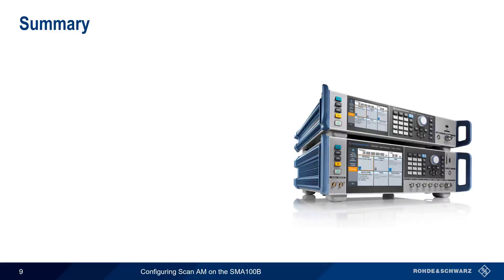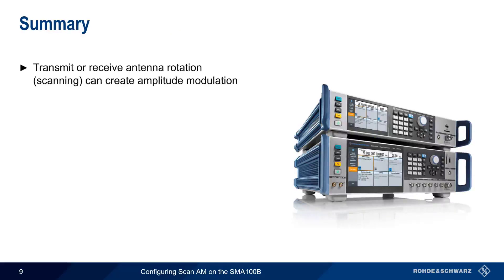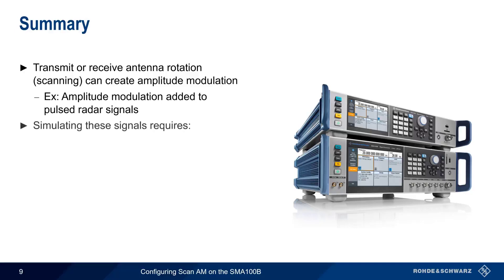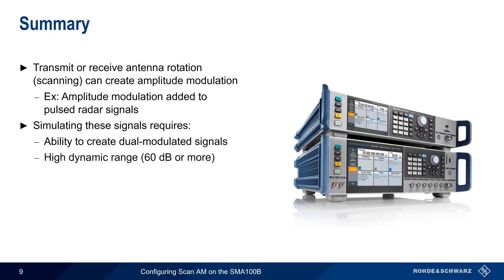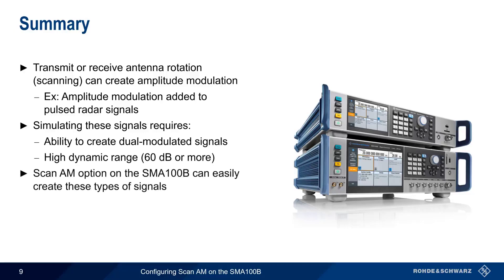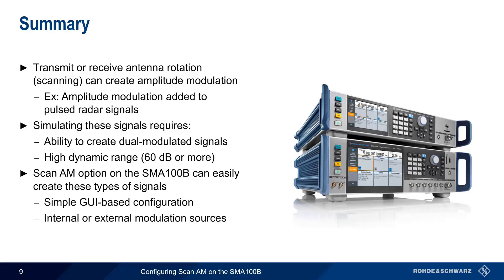Let's end with a brief summary. The rotation or scanning of a transmitting or receiving antenna can impose additional amplitude modulation on a signal, and this is particularly common in pulsed radar systems. In order to simulate this, we need the ability to create signals with combined pulse and amplitude modulation, as well as a very high dynamic range, typically 60 dB or more. The Scan-AM option on the Rohde & Schwarz SMA-100B can easily create these types of signals using a simple GUI-based interface and internal or external modulation sources.